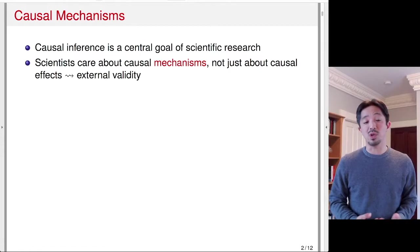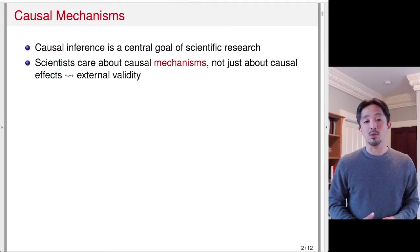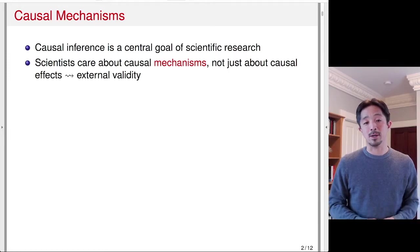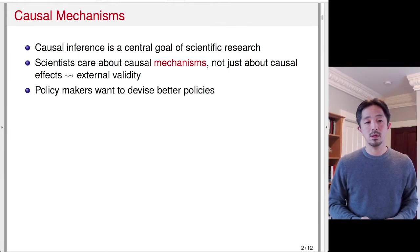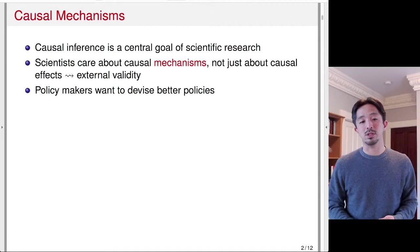This relates to external validity. If you get the causal mechanisms right, you might be able to predict how the treatment affects a different population. Policy makers also care about causal mechanisms, because that helps devise better policies.